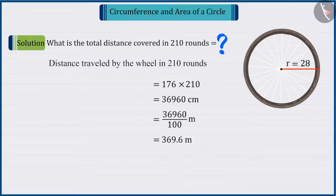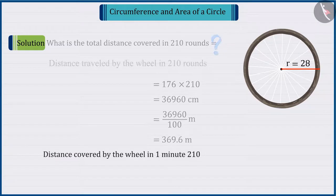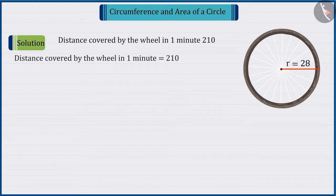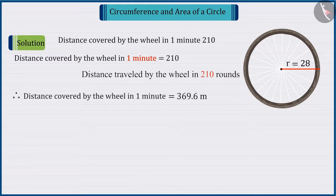Since we are given that the wheels rotate 210 times in a minute, the distance traveled by the wheel in one minute is equal to the distance traveled in 210 rounds.